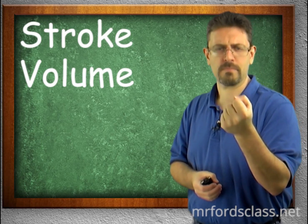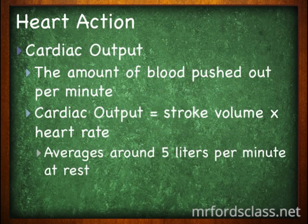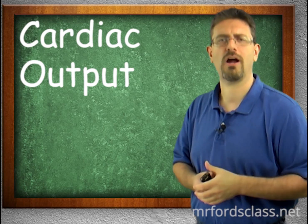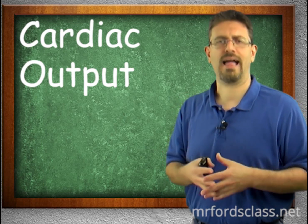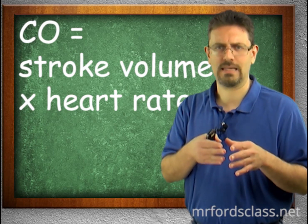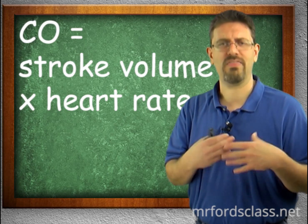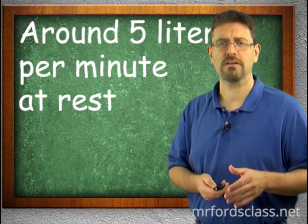Stroke volume is approximately 70 milliliters in a typical adult male at rest. Cardiac output is how much blood leaves the heart over the course of one minute. The equation is: cardiac output equals stroke volume times heart rate. Stroke volume is how much blood is pushed out per beat; heart rate is how fast the heart is beating. Multiplied together, you get the volume leaving the heart per minute — approximately five liters per minute at rest.